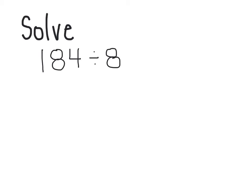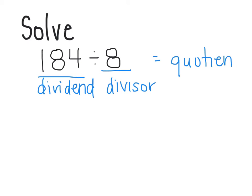So the first problem we're going to look at is 184 divided by 8. Let's go back in our brain and think about what we know about division. We know that this right here is our dividend. We know that we're dividing it by our divisor in hopes to get our quotient.